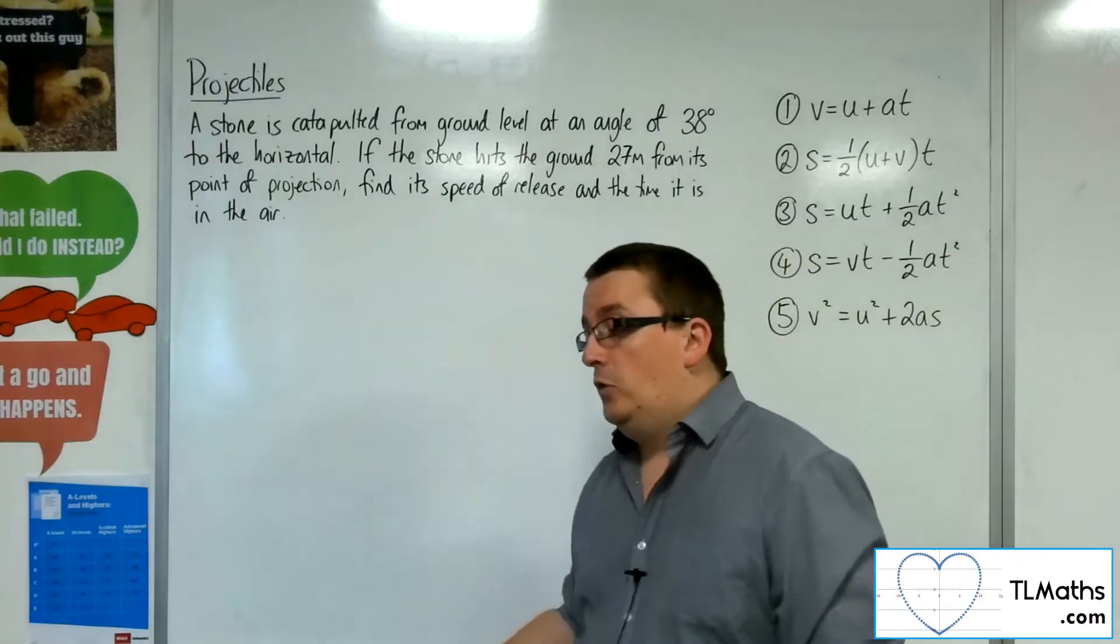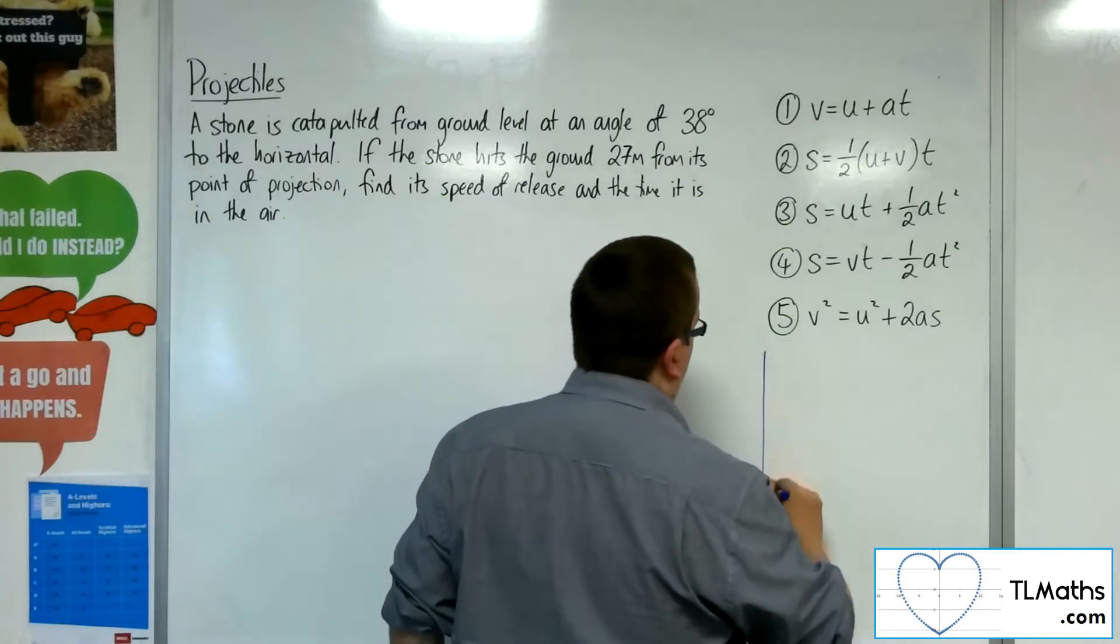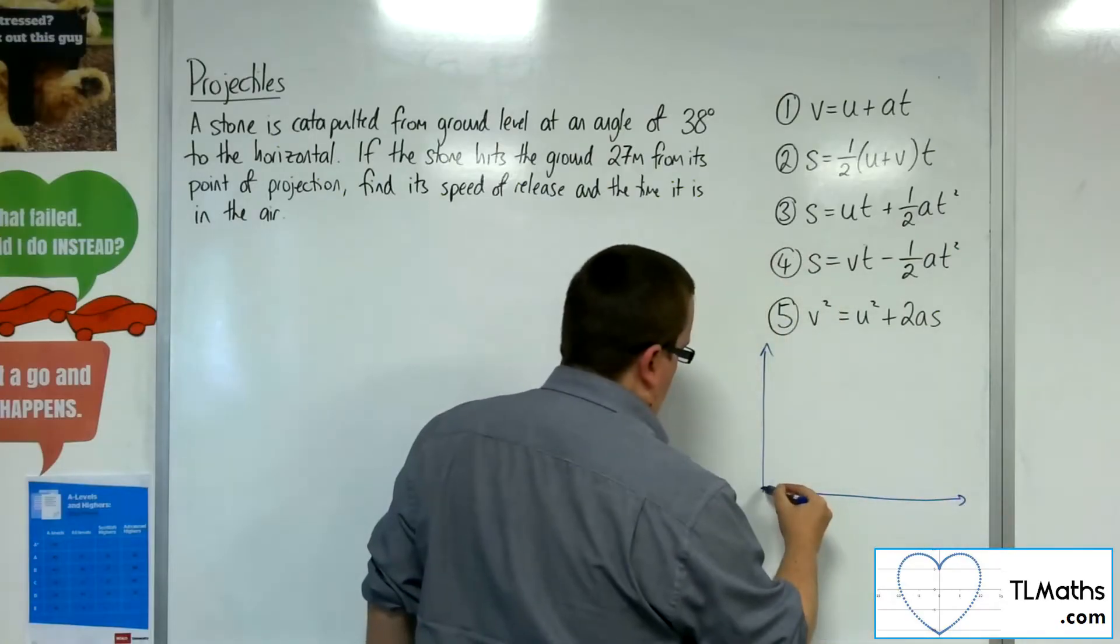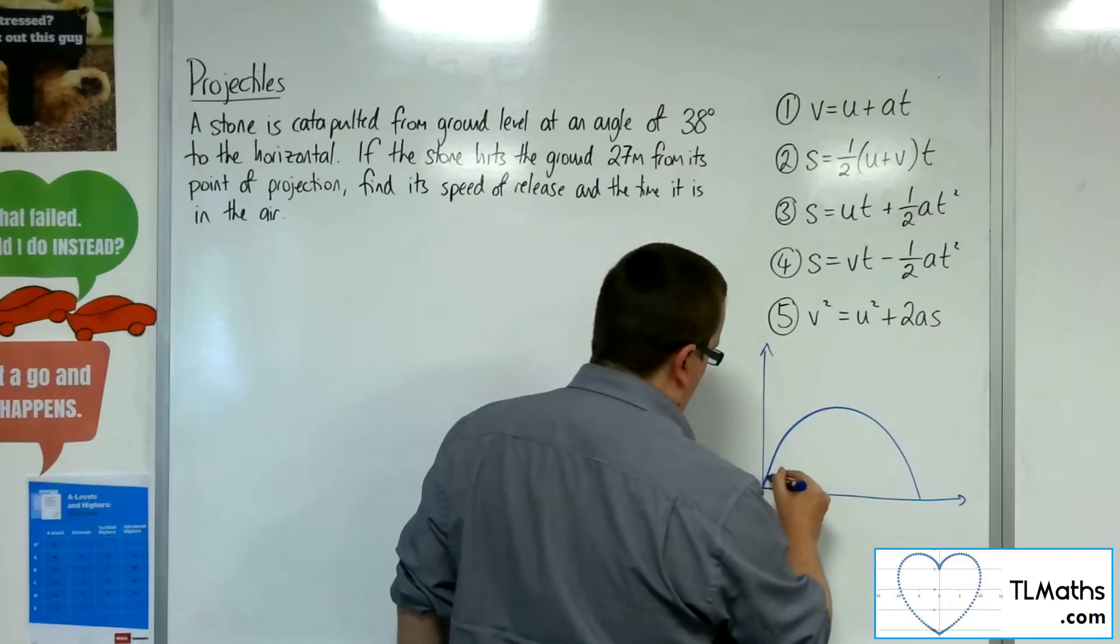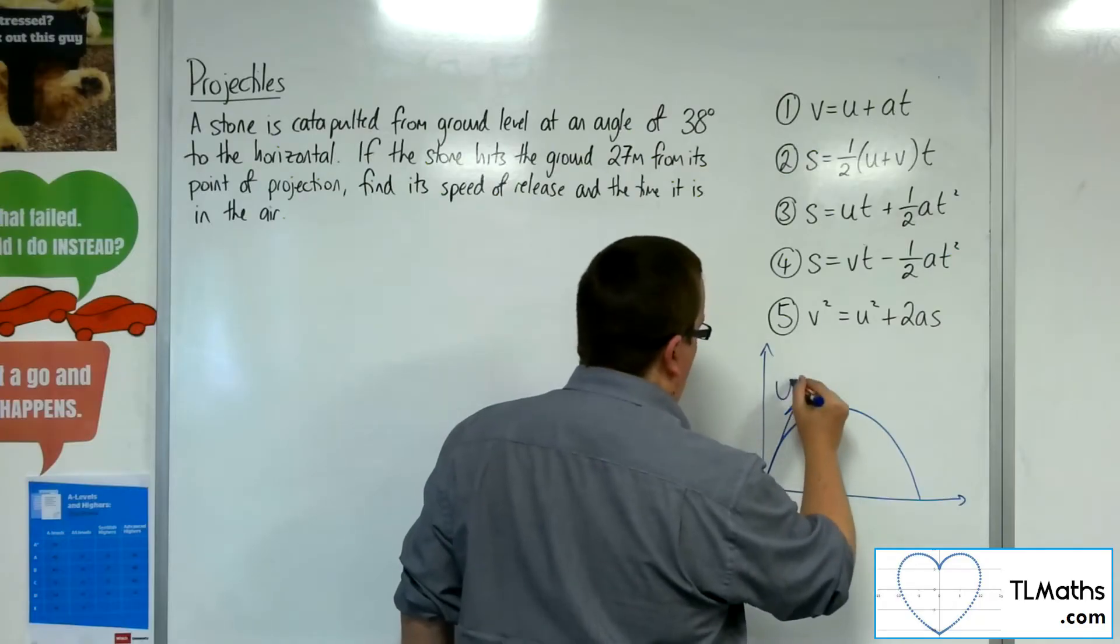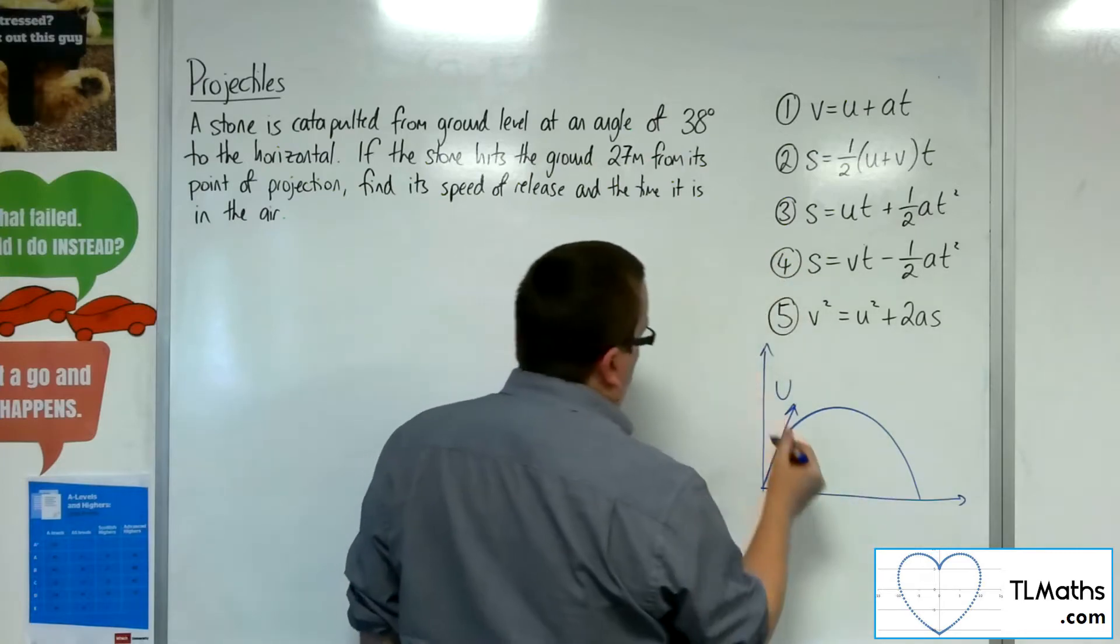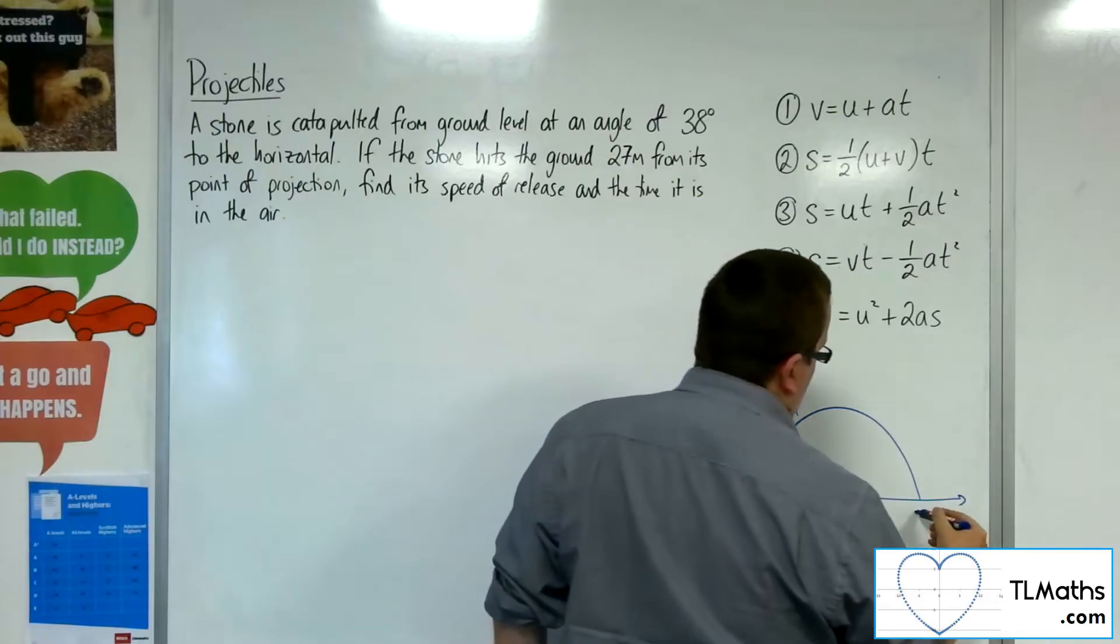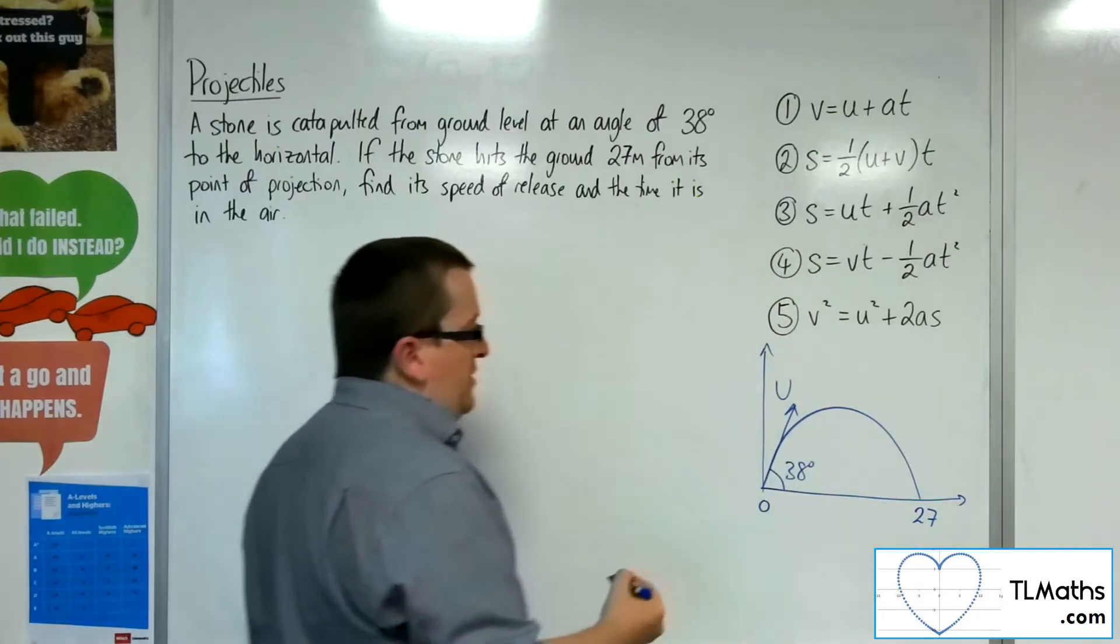So the first thing that we'd like to do is draw a little diagram, just to visualise what's going on. So here's the stone being thrown up into the air and landing. It's got that initial speed that I don't know of u. It's projected at an angle of 38 degrees to the horizontal and it hits the ground 27 metres from where it started.